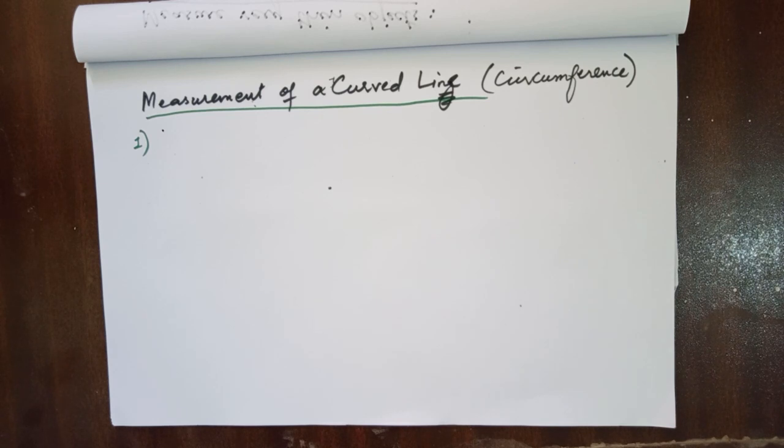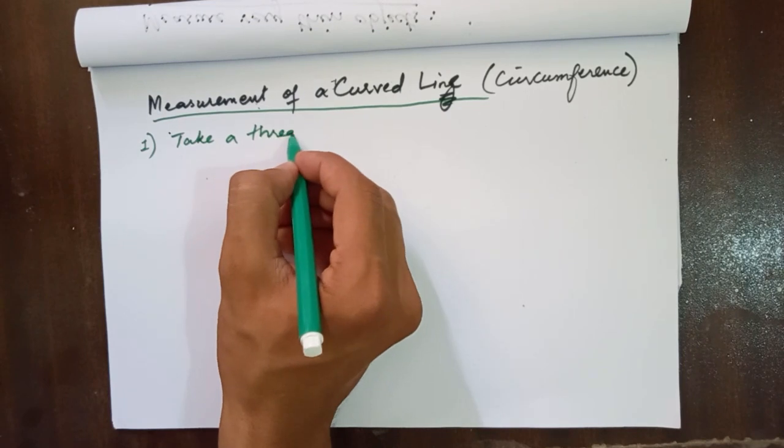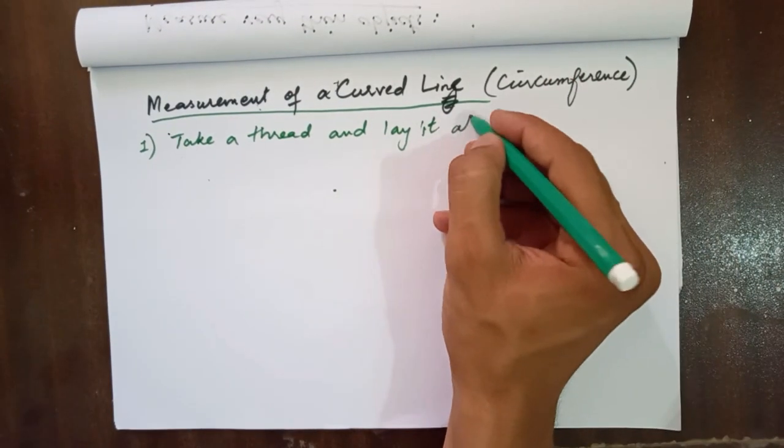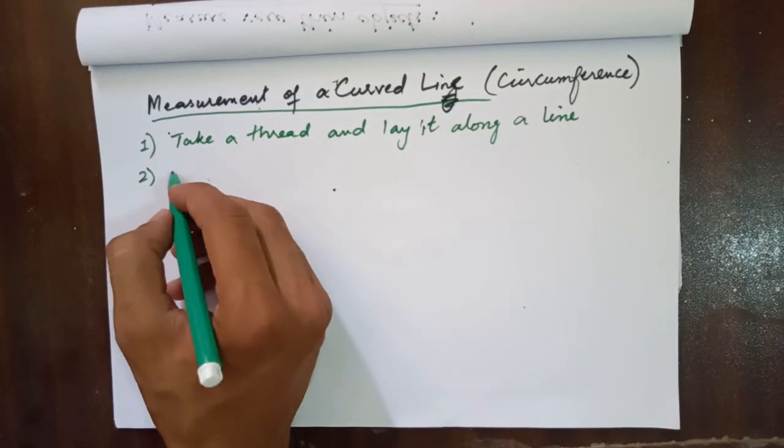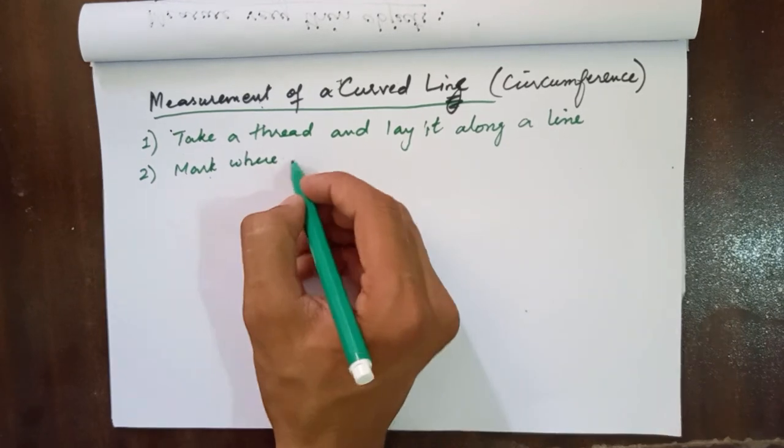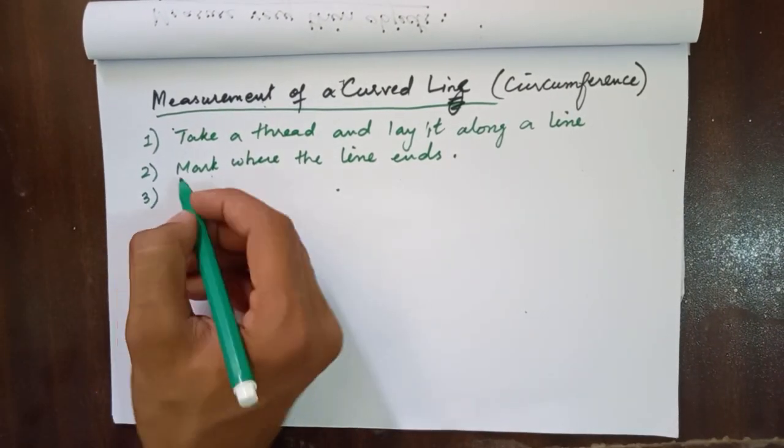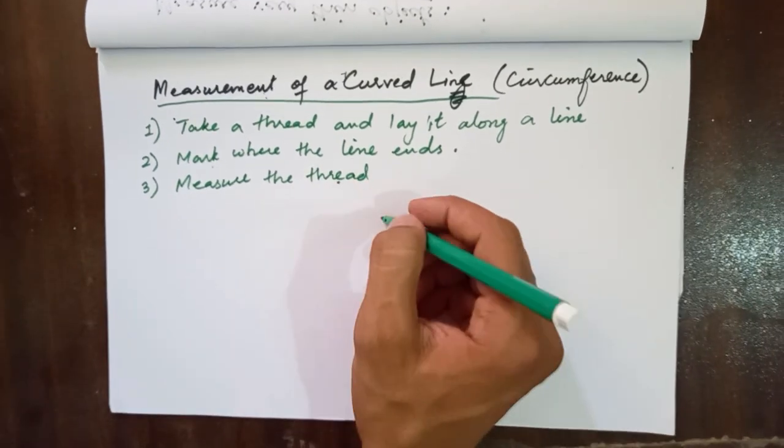The next topic in length measurement is the measurement of a curved line. We often call it circumference. The trick that we use to measure the circumference or a curved line length is to take a thread and lay it along the line. Next step is to mark where the line ends, and then measure the thread on a rule.